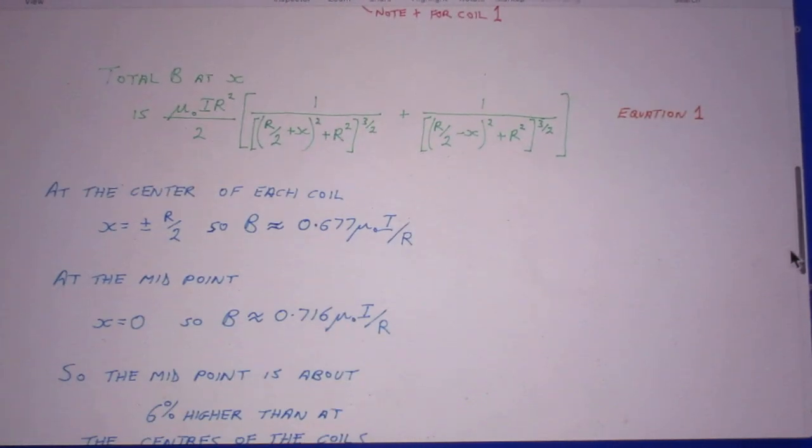And so here he finds the final result, the B field at any position x, the sum of 1 and 2.